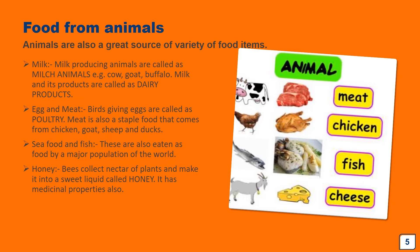Milk and its products are called dairy products. I hope you must be having milk daily in your diet — milk is a very healthy food. Moving on to egg and meat: birds like hen lay eggs and their eggs are consumed as food — such birds are called poultry birds. Meat is also one of the staple food items that comes from chicken, goat, sheep, ducks, etc. Then seafood and fish — a variety of seafoods are eaten in different parts of the world, and fish are also a main component of food in North India and South India.